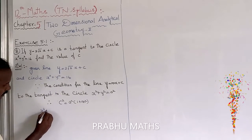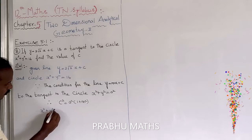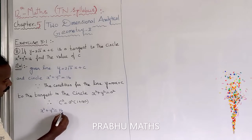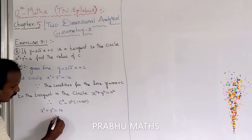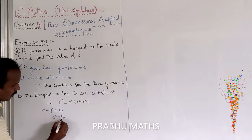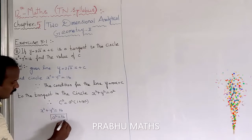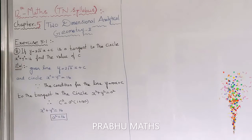From the circle x² + y² = 16, we get a² = 16, therefore a = 4.